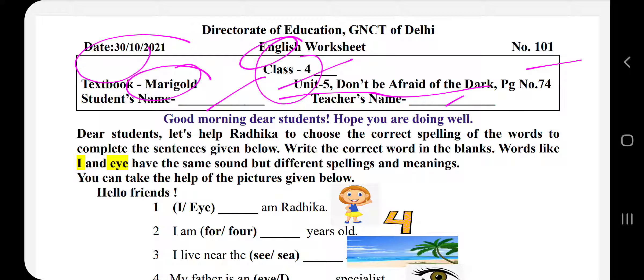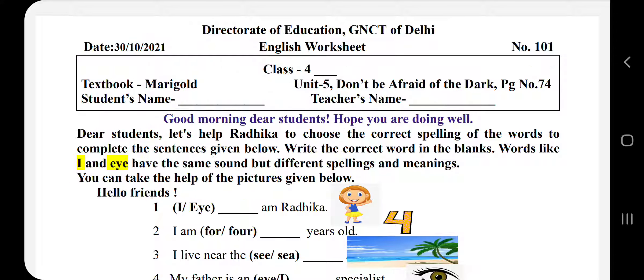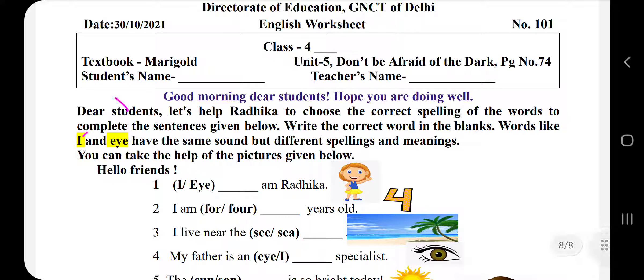You can take the help of the pictures given below. So hello bachos, Radhika ko help karo correct spelling likhne mein aur correct word likhne mein. जैसे कि यह 'I' word है — this I means 'मैं', and this 'I' means 'आई' है. अब Radhika ko correct pictures देखकर यह भरनी है. तो आप इस picture की help भी ले सकते हैं और उनको fill करा सकते हैं.